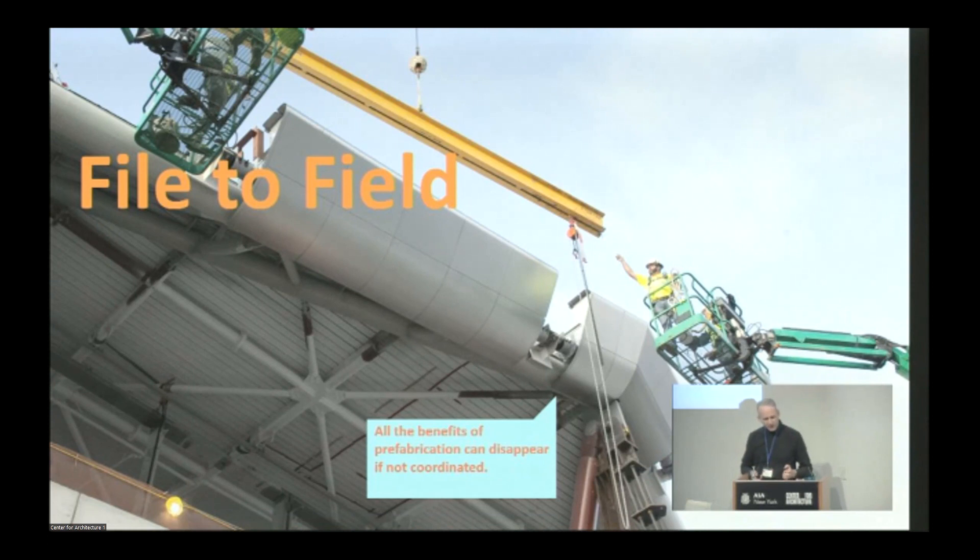The part that we've been really digging in, and two members of my team are here for the hackathon to chat more about, is how do we take that file to the field? The file to the machine, we've got pretty well solved. But unfortunately, all the benefits of prefabrication disappear if you don't coordinate it on site. Because now you've invested a lot of money and time into these parts that are not mutable. They show up on site, you can't cut them, you can't grind them, you can't adjust them. So, you better have that coordinated well.